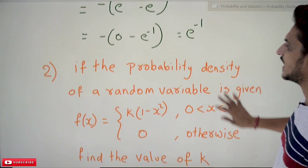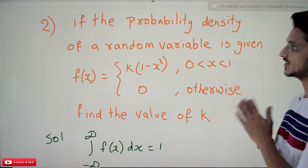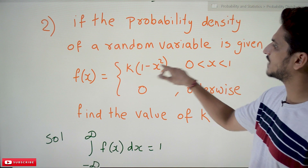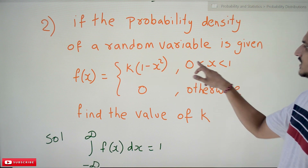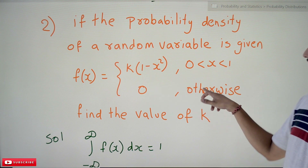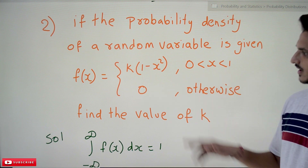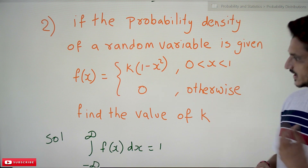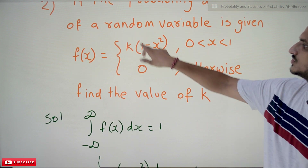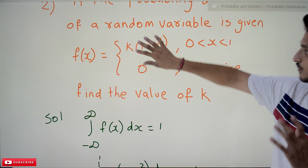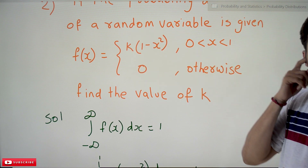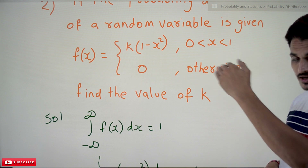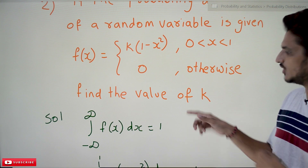Coming to the second question: a probability density function of a random variable is given as f(x) = k(1 − x²) if x is between 0 and 1, otherwise 0. They are asking us to find the value of k. In order to make this function a valid probability density function, the integral from minus infinity to infinity of the area under the curve must equal 1.